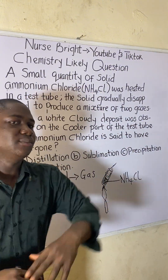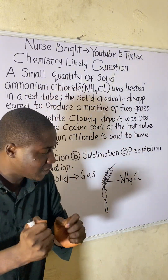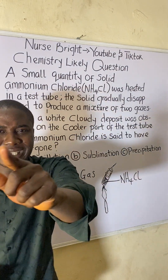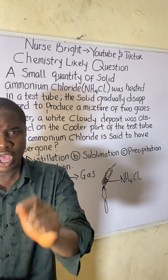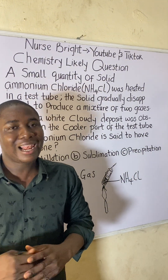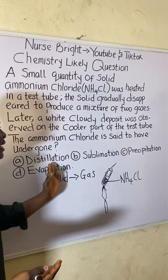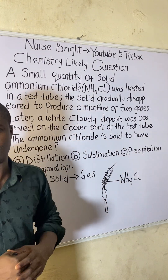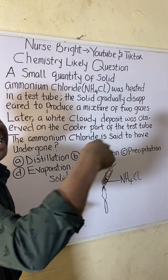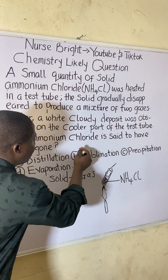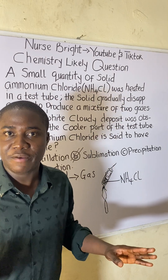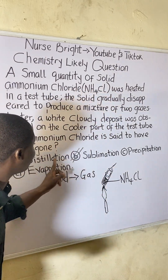This must be noted: the process whereby a substance changes directly from a solid state to a gas state is simply called sublimation. Sublimation is a separation technique. So what ammonium chloride underwent in this question is simply sublimation - that is the answer, and it is extremely easy.